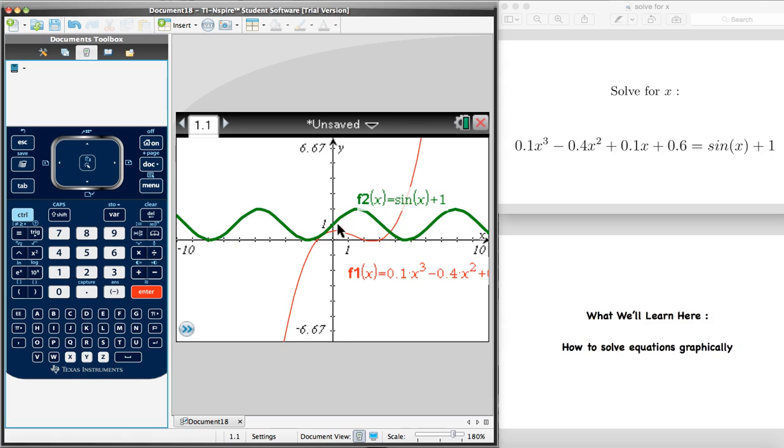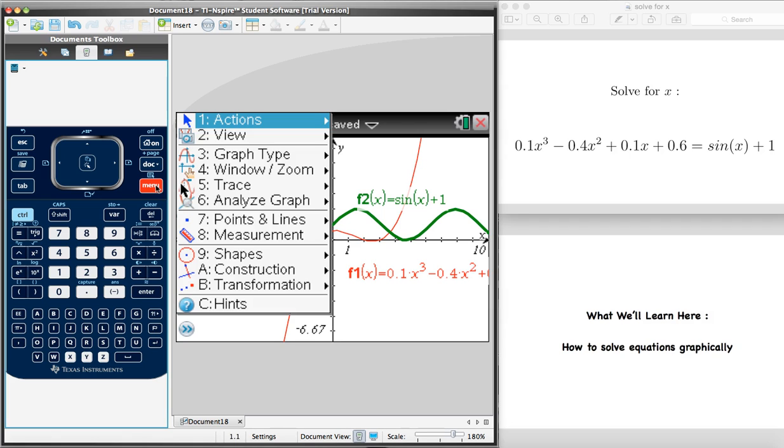So, now it seems as though there could be two intersection points, but we're going to check on that. There's one here for sure. So let's start by figuring out the coordinates of that point of intersection. And to do that, we press on menu. And we select the sixth option, analyze graph.